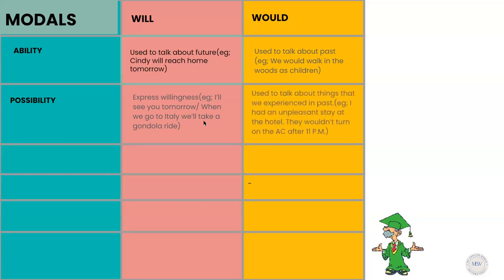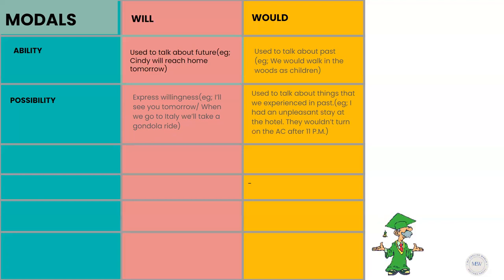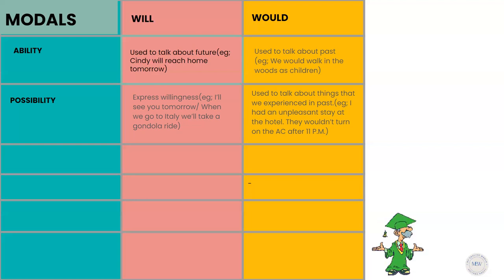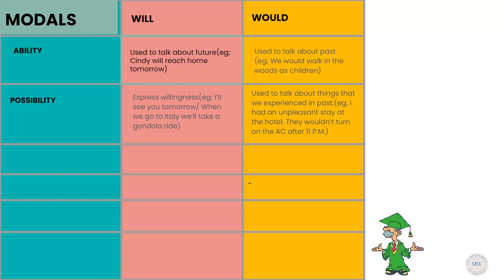Would is used to talk about things experienced in the past. For example: I had an unpleasant stay at the hotel — they wouldn't turn on the AC after 11 PM. Here we are talking about a possibility in the past. Another example: The baby wouldn't stop crying. So would here is used to talk about a past event or experience.